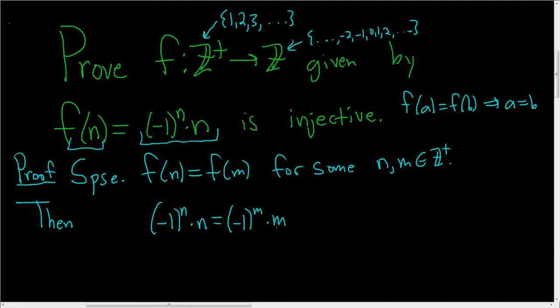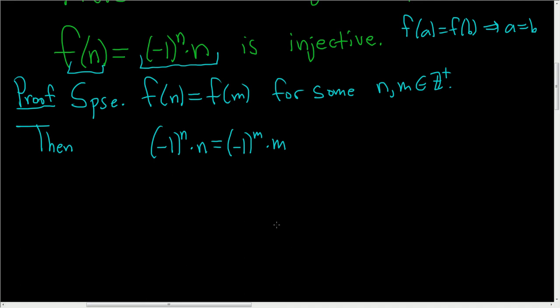Now we have to show that n = m. One way to do this is to divide both sides by (-1)^m. We get [(-1)^n · n] / (-1)^m = m.